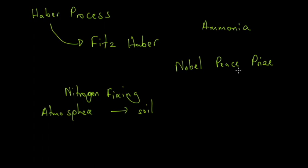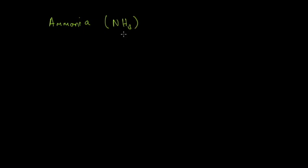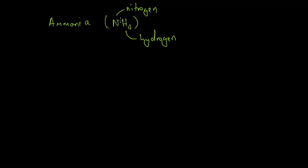That's why Fritz Haber won a Nobel Prize. Now into the details — what exactly is ammonia? At room temperature, ammonia is a molecule. If you're doing chemistry or combined science you need to know it's NH3 — N for nitrogen and H3 for hydrogen. This means that in each ammonia molecule, which is called a molecule because it comprises elements chemically bonded together, you have nitrogen and hydrogen — these are elements found in the periodic table.